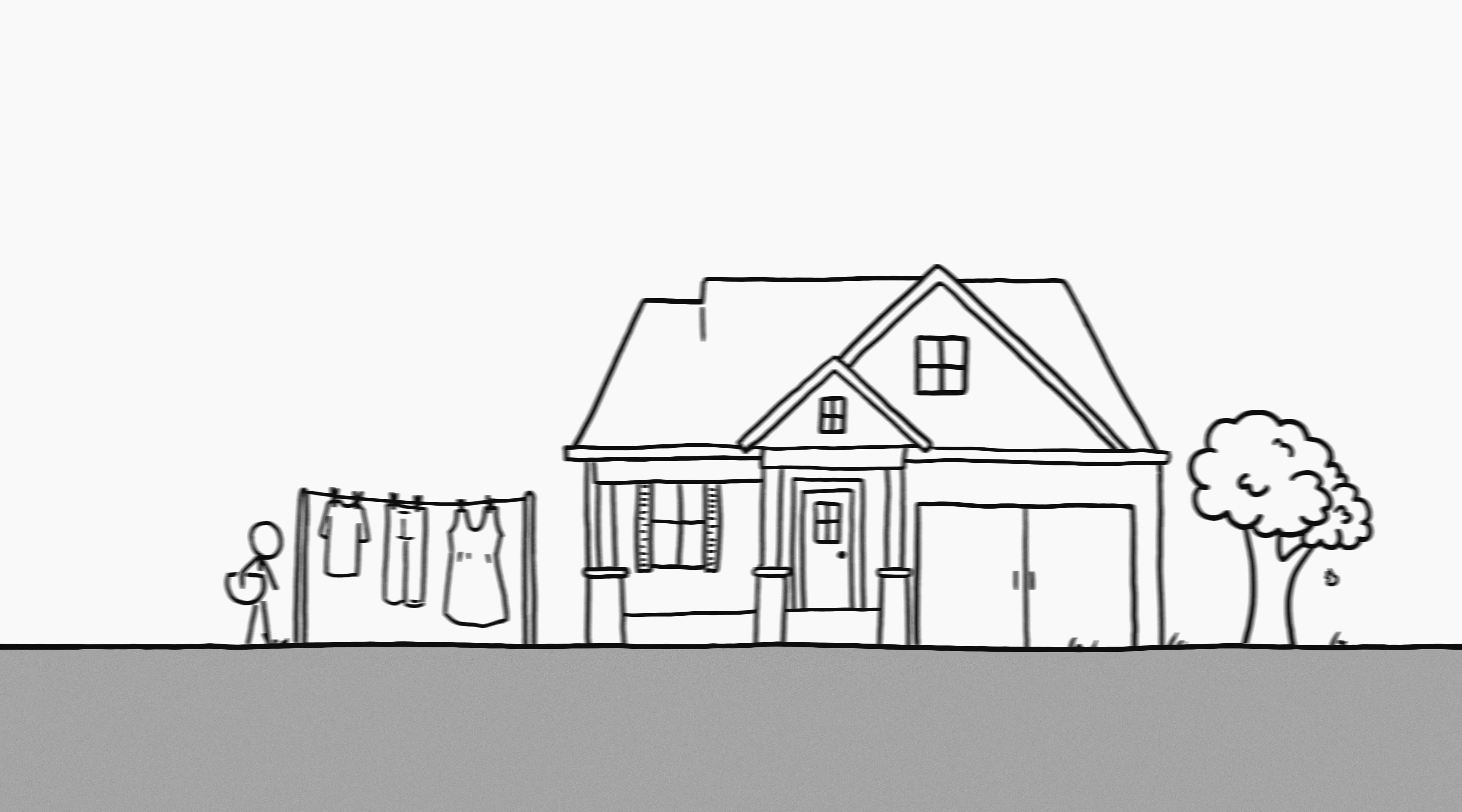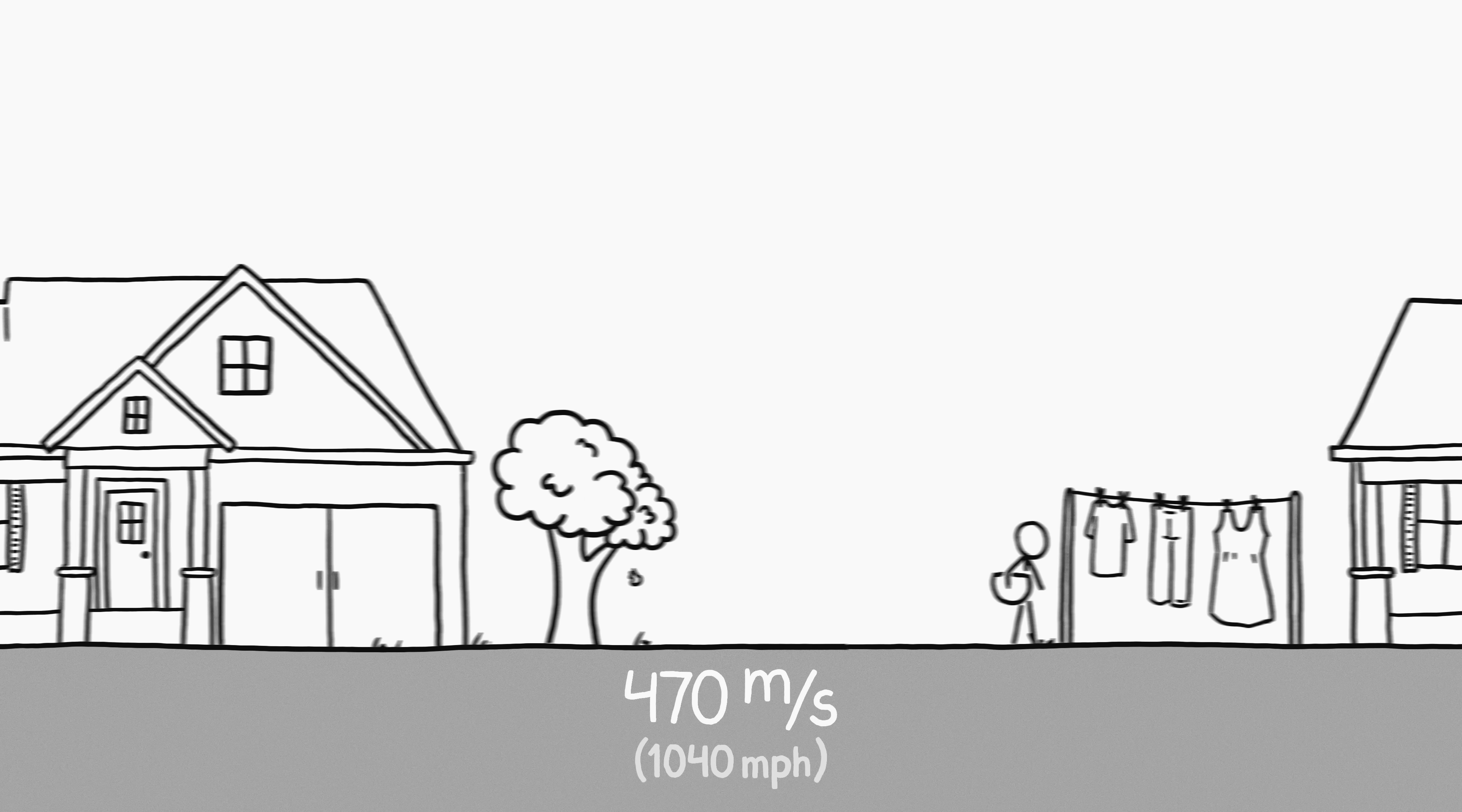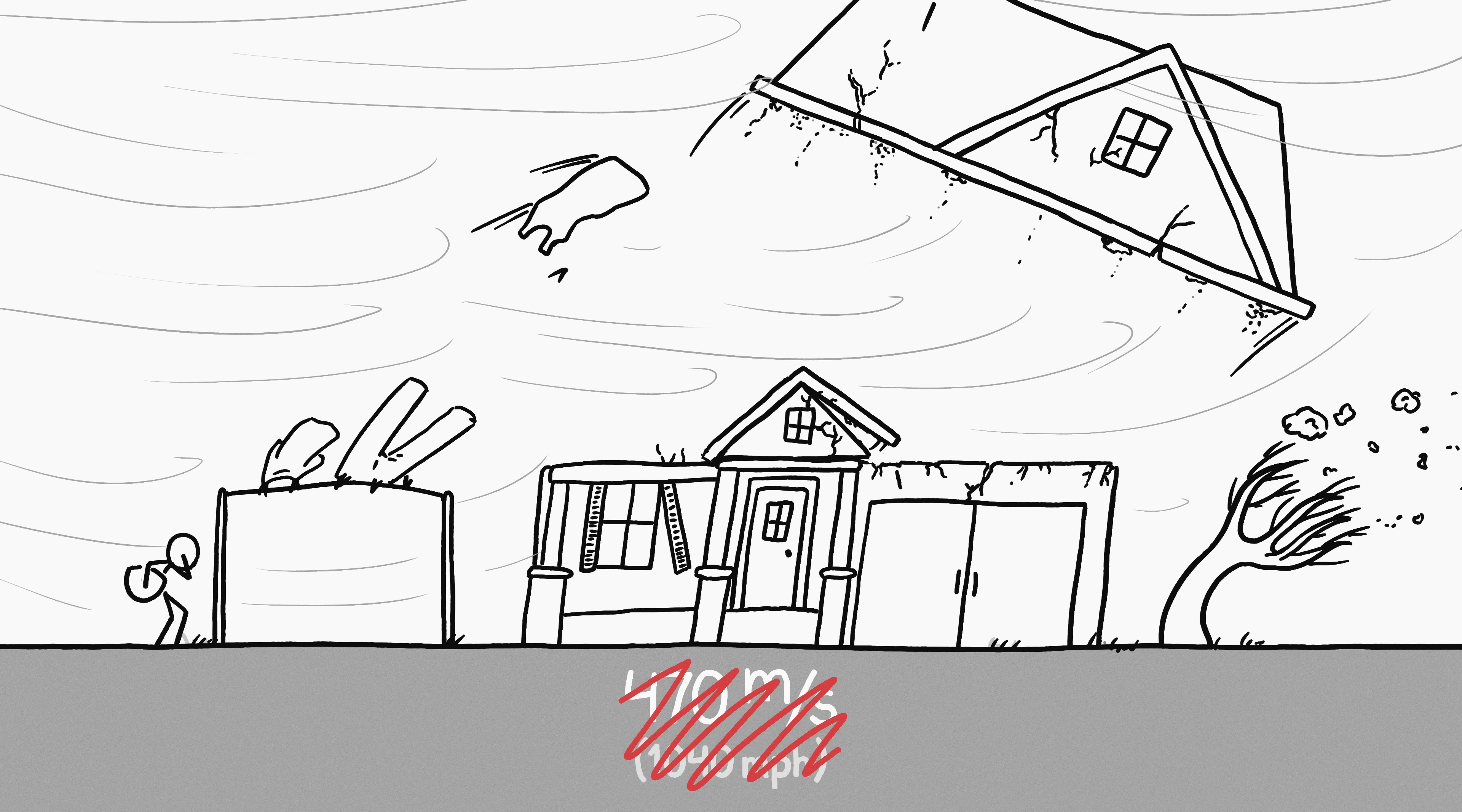At the equator, the Earth's surface is moving at about 470 meters per second, a little over a thousand miles an hour, relative to its axis. If the Earth stops and the air doesn't, the air there will suddenly be moving over the surface at 470 meters per second.